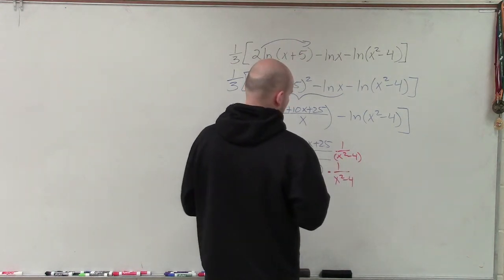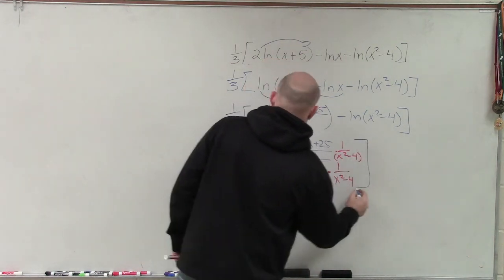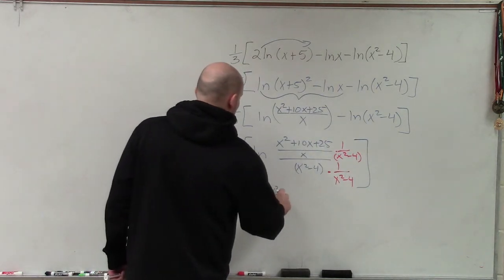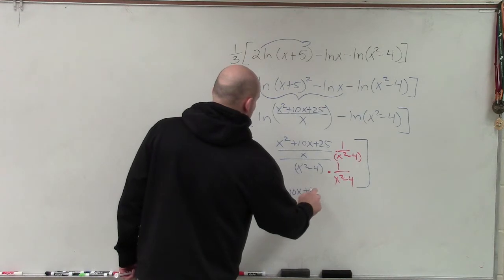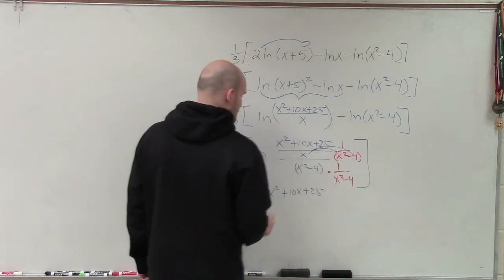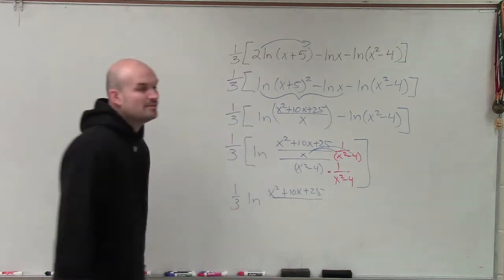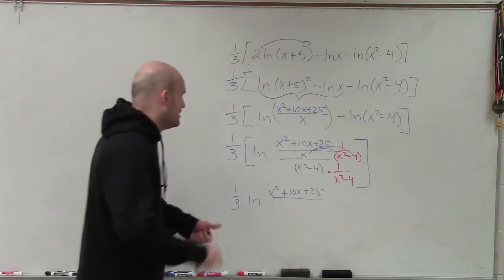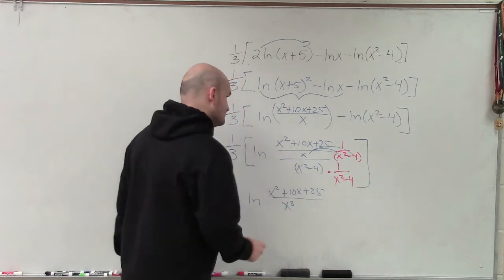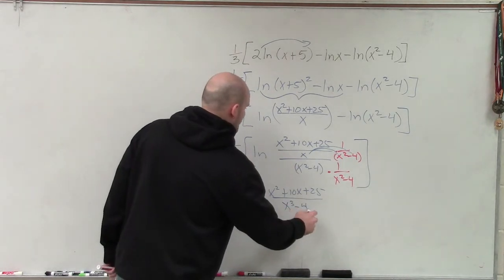Now by doing that, I'll now have 1 third ln of x squared plus 10x plus 25. And now what I'm going to do is I'm going to distribute the x into both of those terms. You can also leave this problem without expanding, but I'm deciding to expand them. So that would be x cubed minus 4x.